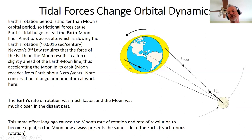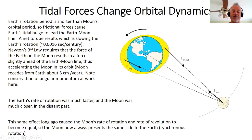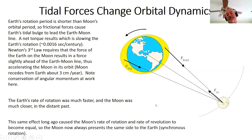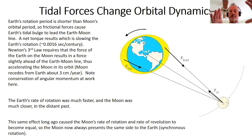This same slowing effect, but much stronger since the Earth's tidal force on the Moon is about 20 times larger, long ago caused the Moon's rotation rate to slow until it matched its orbital period. Now the Moon always keeps the same hemisphere facing Earth — we only ever see the near side. This is called synchronous rotation.